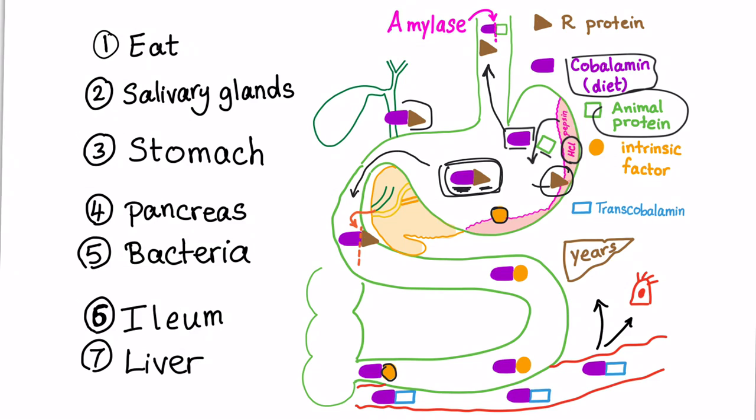Let's go through the duodenum. The pancreas will secrete protease enzyme to sever this bond between the B12 and the R protein, and it will make this R protein bind the intrinsic factor that was made in the stomach. So intrinsic factor is made in the stomach, but it's bound to the B12 in the intestine.